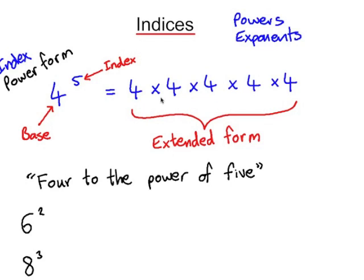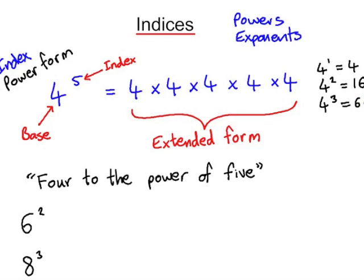Just be careful here — it's not five multiplications. Notice there are only four multiplication symbols. We can work this out using multiplication: four to the power of one is four; four to the power of two is four times four, which is sixteen; four to the power of three is sixty-four; four to the power of four is two hundred and fifty-six; and four to the power of five is four times four times four times four times four, which is one thousand and twenty-four.